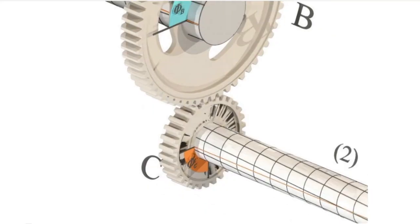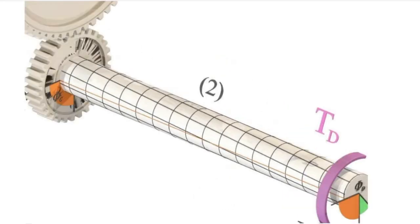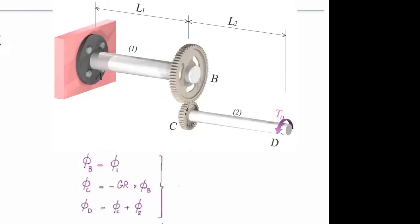In that case, phi at C is equal to negative gear ratio times phi at B. Because these two are connected together. Now, let's move all the way to the right. How much would be twist at D? Twist at that point is equal to the initial twist, which is phi at C, plus the twist in that shaft, which is phi 2. Now let me put all these equations together.